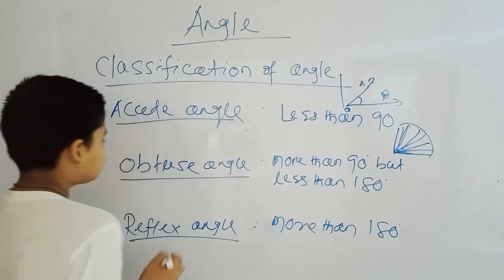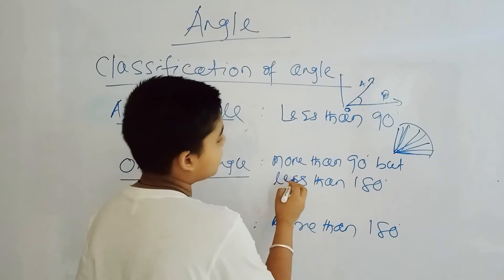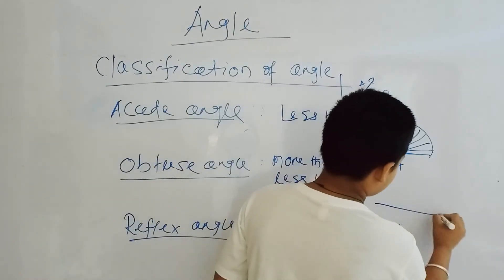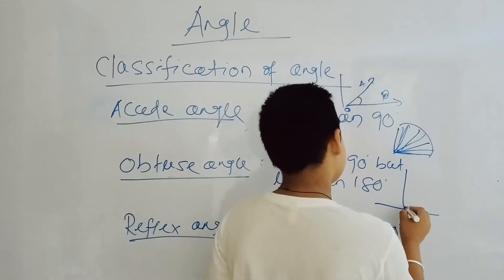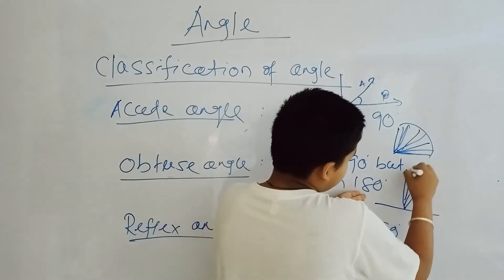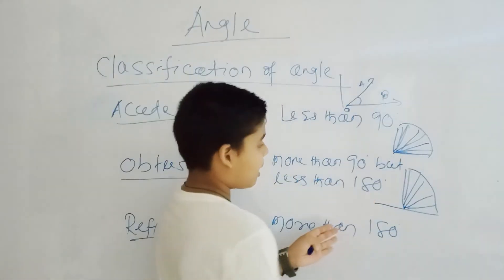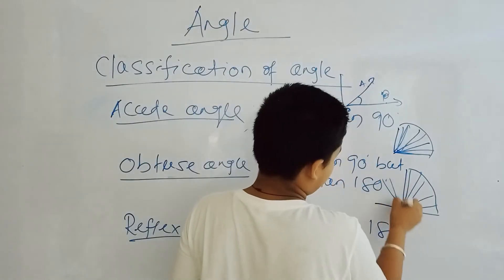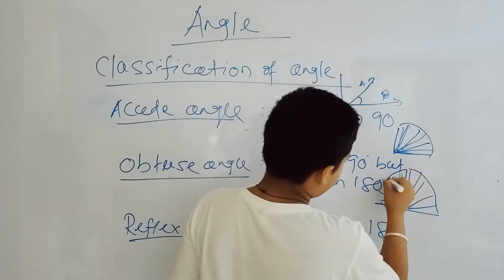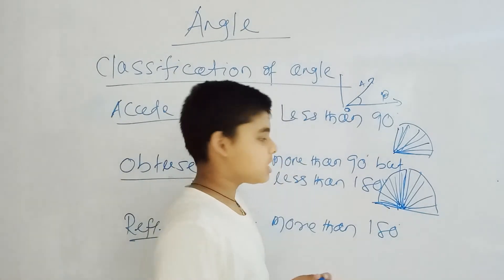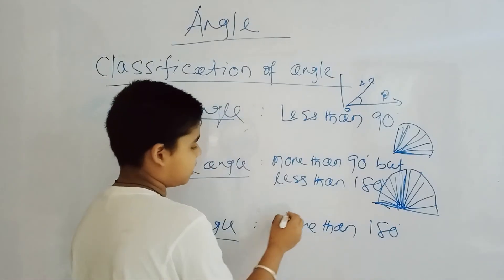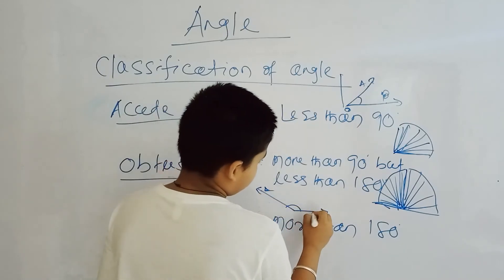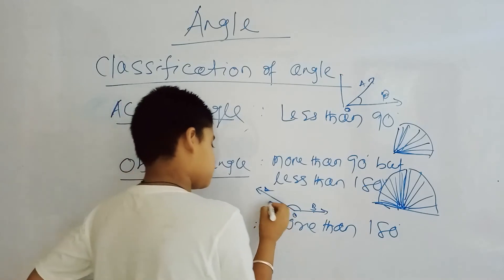Moving to the obtuse angle — the obtuse angle should be more than 90 degrees but less than 180 degrees. So any angle between 90 degrees and 180 degrees is an obtuse angle. For example, suppose the angle measures 150 degrees or 130 degrees — it is greater than 90 degrees but less than 180 degrees, so it is an obtuse angle.